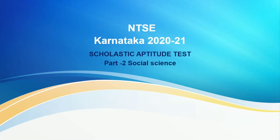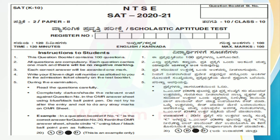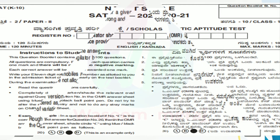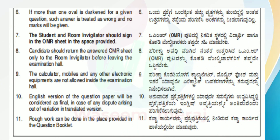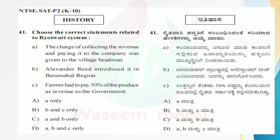Hi everyone, welcome to my YouTube channel. In this video I will bring you NTSC Karnataka 2021 chat paper Part 2 Social Science. So let's start with the first question. Before marking the answer, you will read instructions carefully. There are 11 instructions. Now let's start with the first question — there is a history question, question number 41.